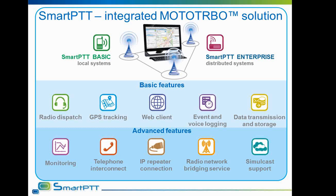SmartPTT comes in two options. SmartPTT Basic is a solution for small local radio networks where a control station is used to dispatch the system. SmartPTT Enterprise allows dispatch and control over complex Motorola MOTOTRBO networks such as IP Site Connect, Capacity Plus, Link Capacity Plus, and Connect Plus.